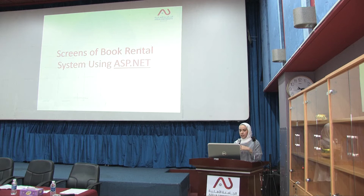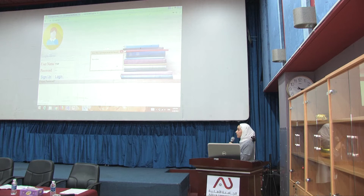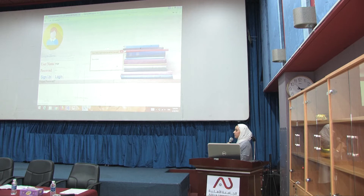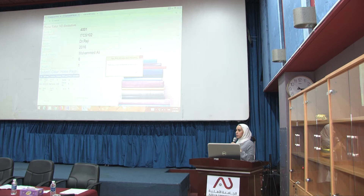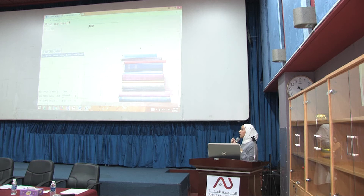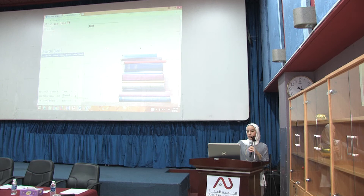Here we have some screens of our system. First, we have the login page, where the user must enter a username and password to access the system. On the next page, we have two options: adding a book or searching for a book. In the add book page, a user must enter all required fields and click submit so the data will be stored in the database. In the search page, a student or user can search for a specific book by entering the book ID only, and this table helps students find all information related to available books.